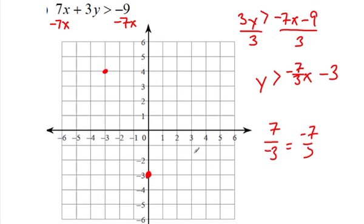So now it says greater than. So is it a solid or dotted line? It's a dotted line. I'm going to make this the best I can. Not even close to being straight.